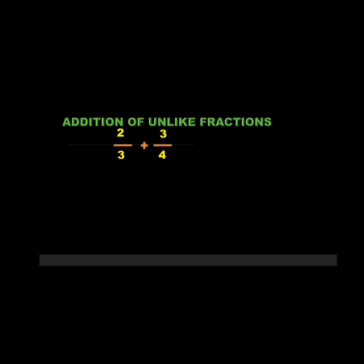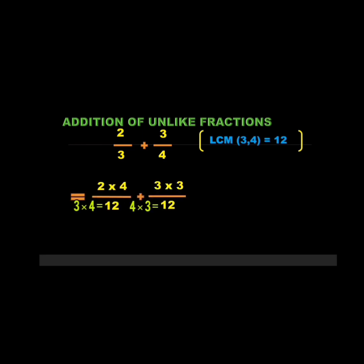Now let us take another example of unlike fractions. Here 3 and 4 are the denominators, and we take the LCM of 3 and 4, which equals 12. We convert each fraction into its equivalent fraction so they become like fractions of each other. After converting, keep the same denominator and add the numerators.